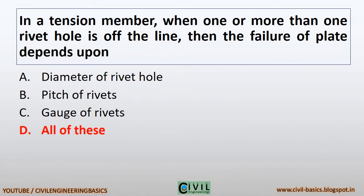In a tension member, when one or more than one rivet hole is off the line, the failure of the plate depends upon the diameter of the rivet hole, the pitch of rivets, and the gauge of rivets — all of these factors affect the failure of the plate.